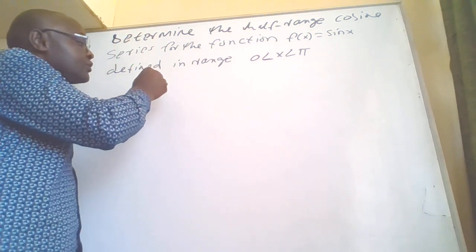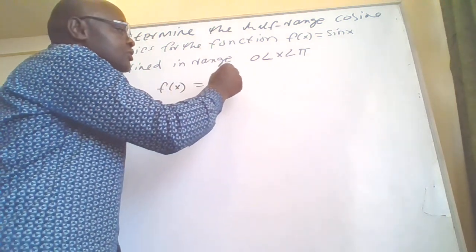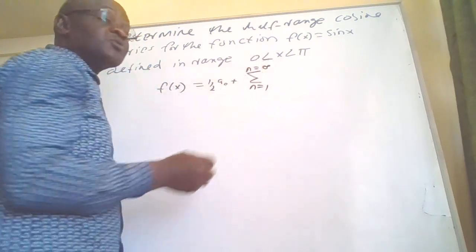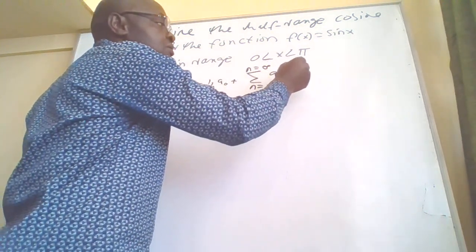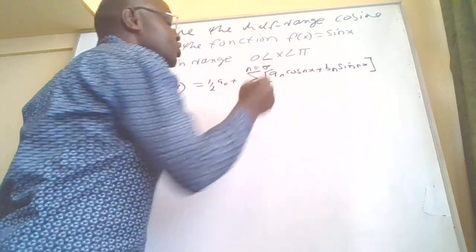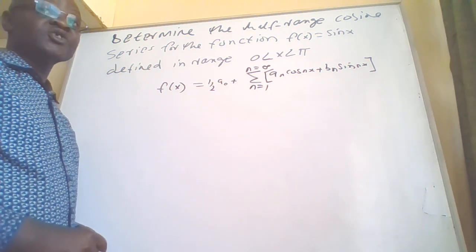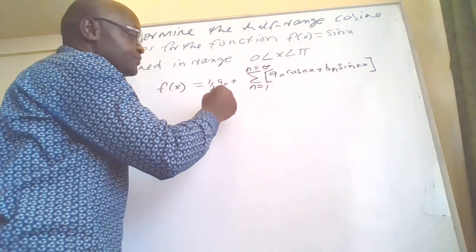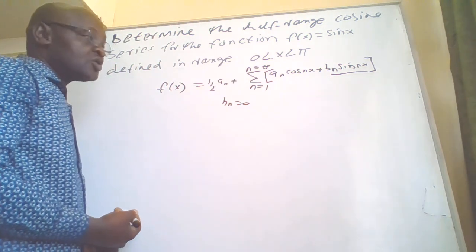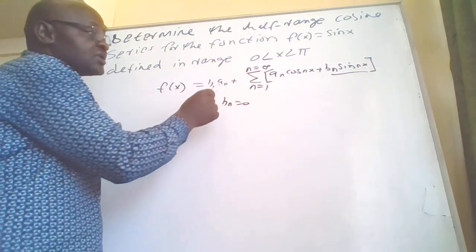We know that the Fourier series is given by (a₀/2) plus the summation from n = 1 to positive infinity. Now, when they talk of a half-range cosine series, it means bₙ would be equal to 0, so we shall not have the sine terms. For this equation, our Fourier series only has aₙ and a₀, so we shall be required to get a₀ and aₙ.